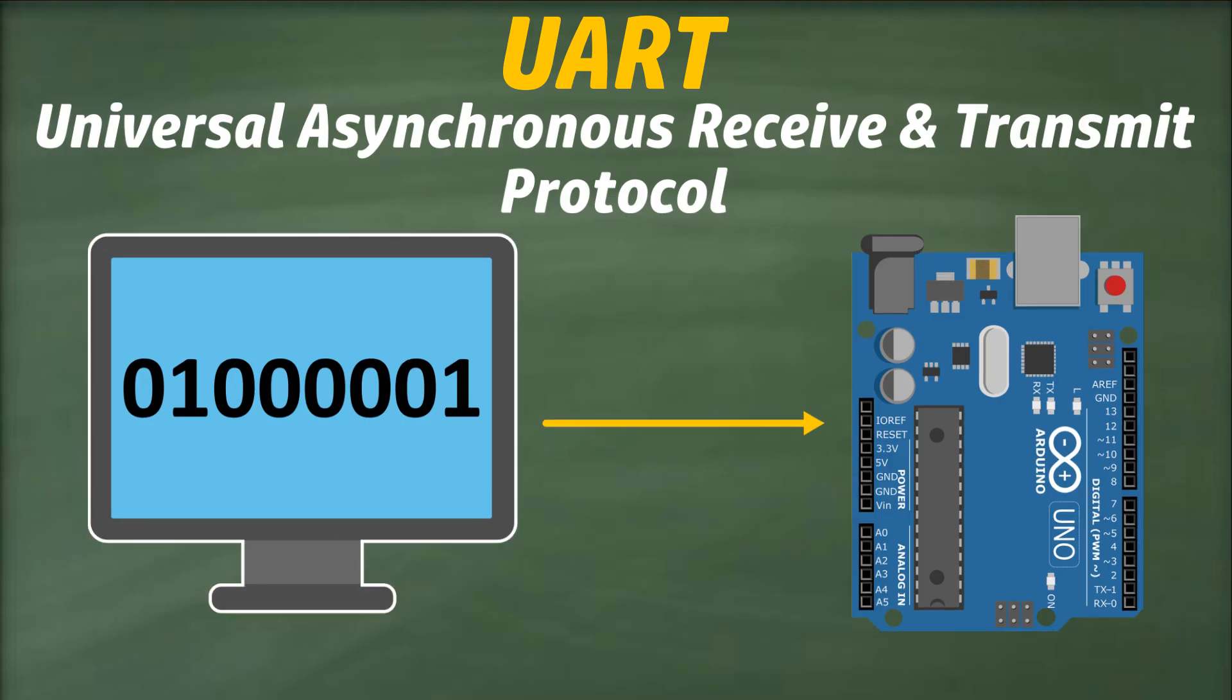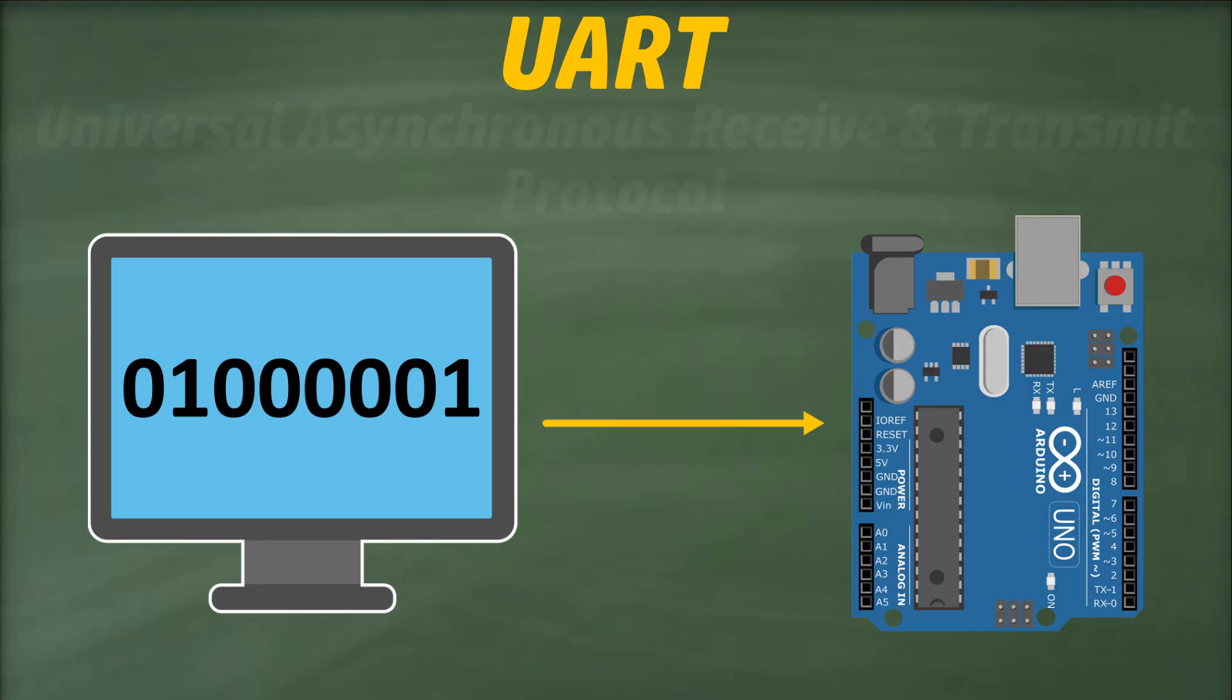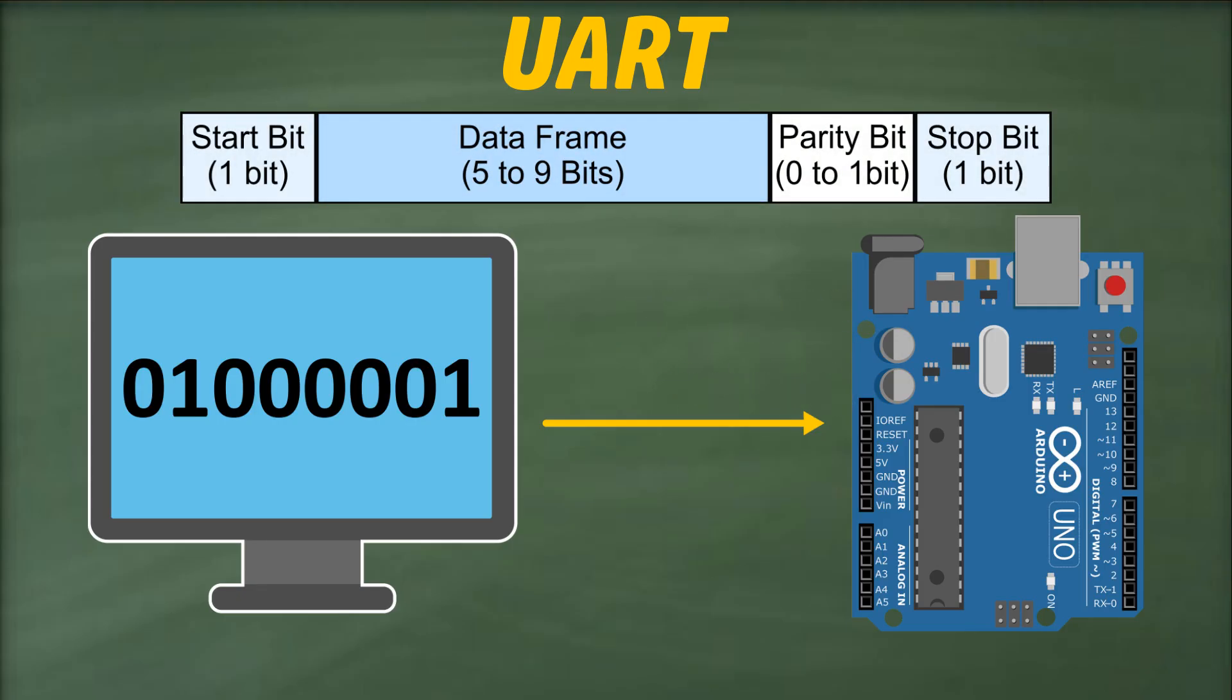When both sender and receiver agree to use the UART protocol for communication, then the data is transmitted in the form of structured data packets. A typical UART data packet looks like this. Let's explain each section of the data packet.